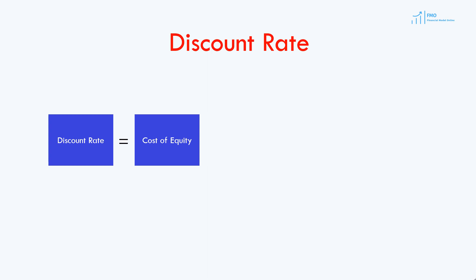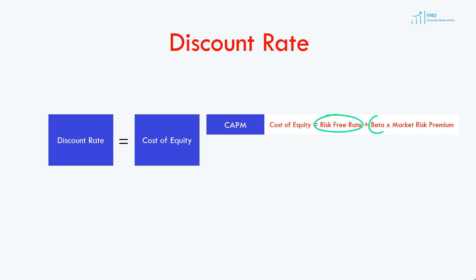The first is a formula called the Capital Asset Pricing Model, or CAPM. It is academically sound and extensively used by practitioners, especially in the realm of public equities or companies listed on stock exchanges. According to CAPM, cost of equity equals the risk-free rate plus beta times the market risk premium. The risk-free rate is usually the yield on long-term treasuries. Beta measures a stock's volatility relative to the market — the sensitivity of stock returns to market returns. Market risk premium is the additional return an investor expects from holding a portfolio of risky stocks instead of risk-free assets.